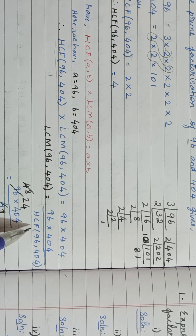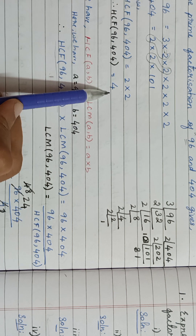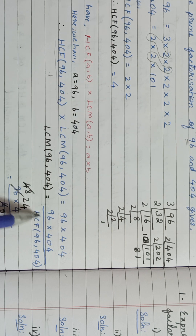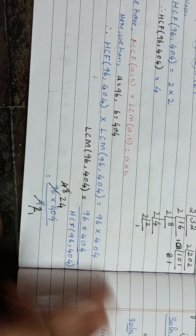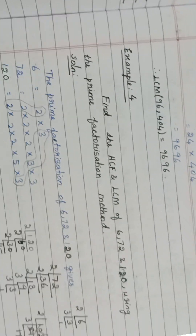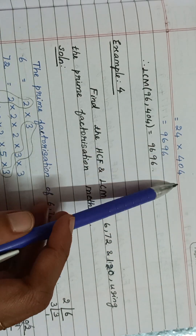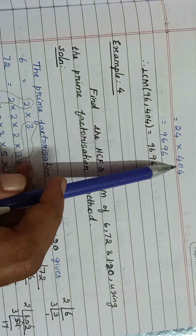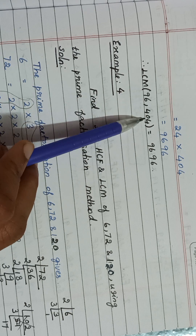Now you already know the value of HCF of 96 and 404, so apply that value and simplify. You get 24 into 404, which equals the LCM of the given numbers.